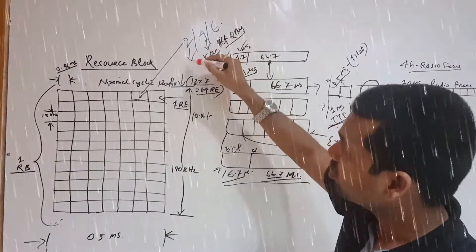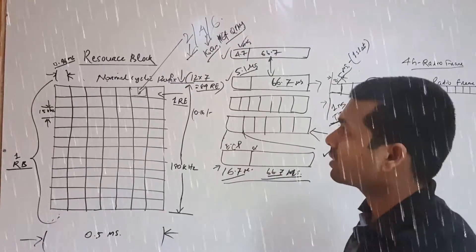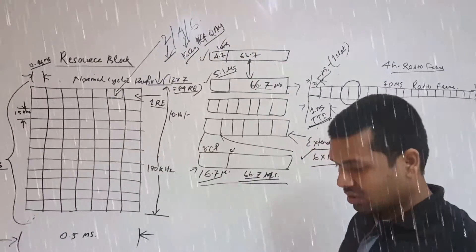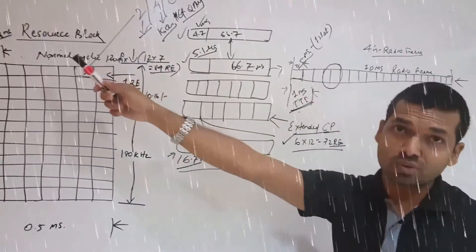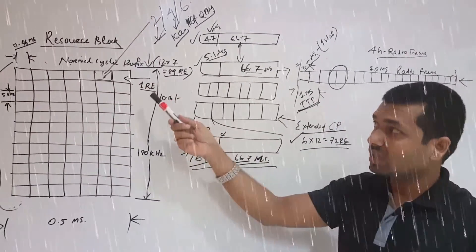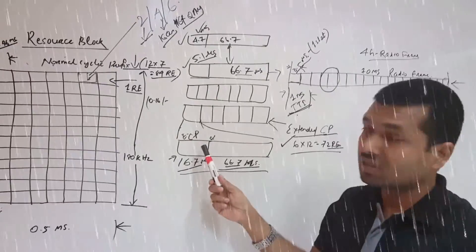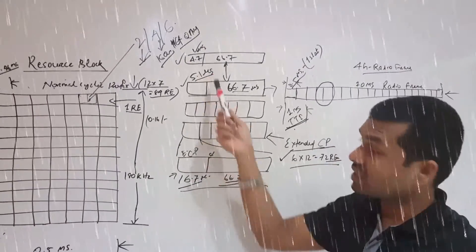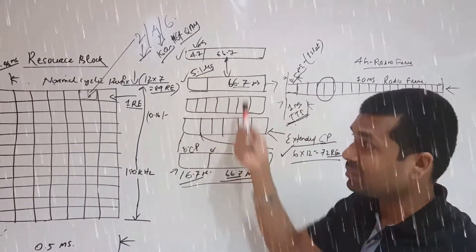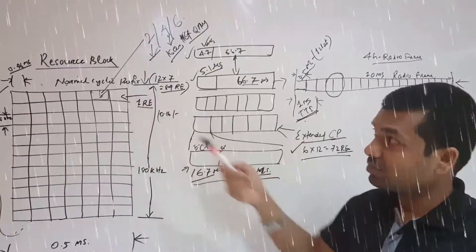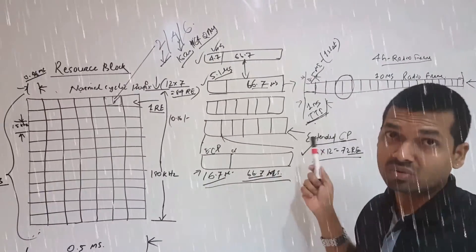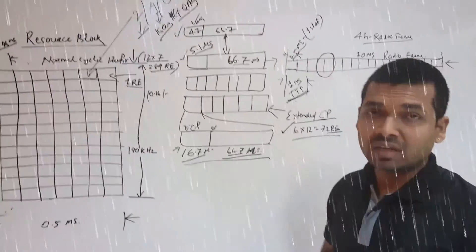So this is the total overview of the radio frame, the resource block, and the resource element, how the extended cyclic prefix and the normal cyclic prefix are used, what are the timings, and what is the number of resource elements if normal cyclic prefix and extended cyclic prefix are used. Thank you, thanks a lot.